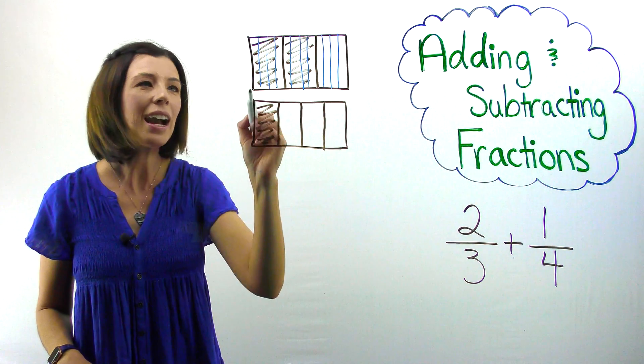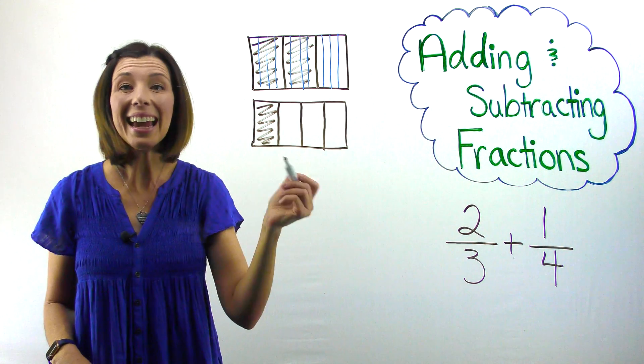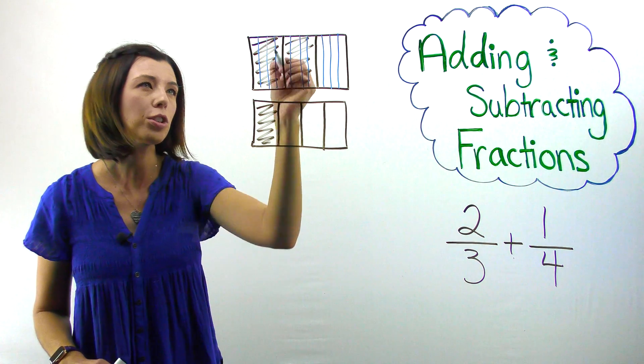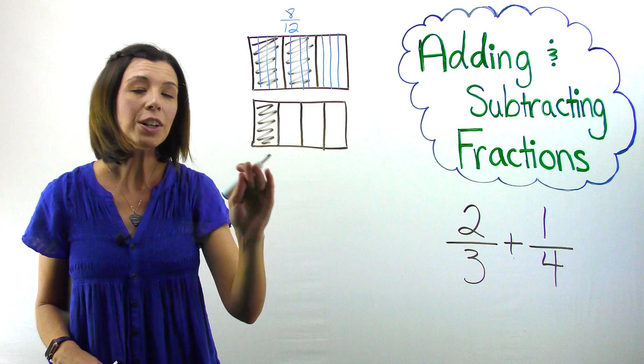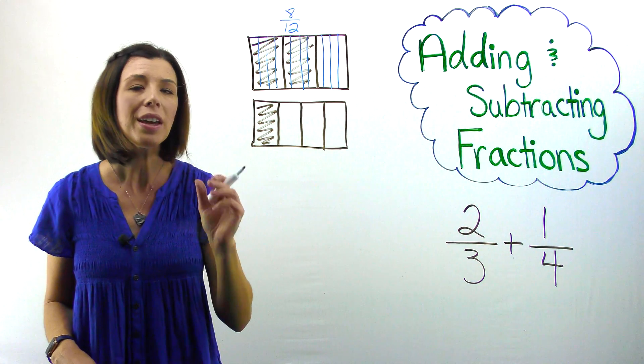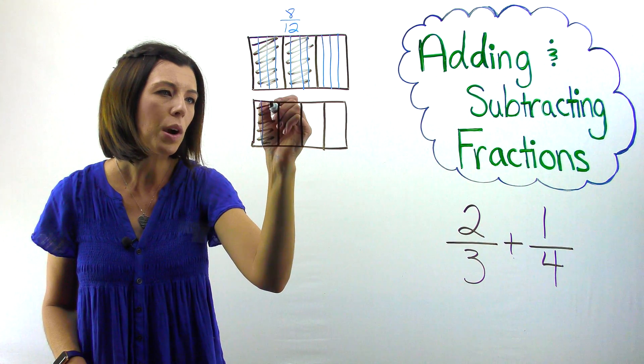I now see that I have one, two, three, four, five, six, seven, eight, nine, ten, eleven, twelve. And eight copies of one-twelfth are shaded. So I have eight-twelfths here. Down here I know that I can partition each copy of a fourth into three equal size pieces. This will also give me twelfths.